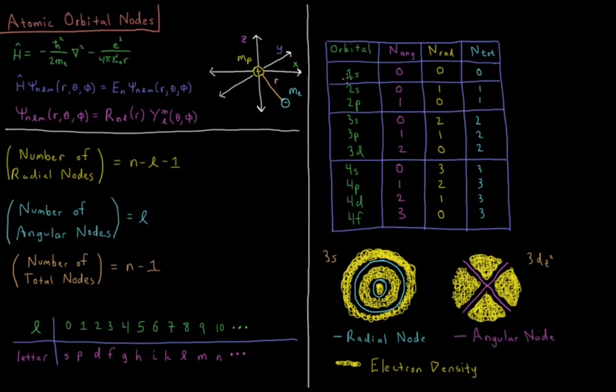If we look at some common orbitals, the 1S function, if we substitute in these values of N and L, 1S is N equals one, L equals zero. That's zero angular nodes, zero radial nodes, and zero total nodes. The 1S is just a spherically symmetric decaying function. For the 2S, N equals two, L equals zero, so we have zero angular nodes but one radial node, one total node.